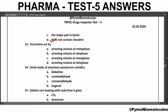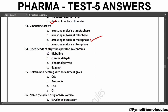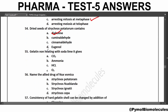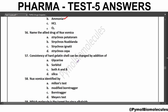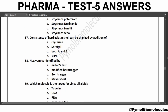Vinblastine and Vincristine both act by the same mechanism: arresting mitosis at metaphase. They are used in the treatment of leukemia. Gelatin on heating with sodaline gives ammonia. The allied drug of Nux vomica is Strychnos ignatii; another allied drug is Strychnos wallichiana. The consistency of a hot gelatin shell can be changed by addition of glycerine and sorbitol.